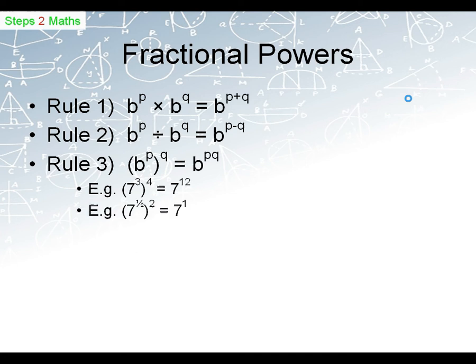However, what if we have something like 7 to the power of 1 half? So instead of powers of integers numbers, we've got powers of fractional numbers. 7 to the power of 1 half, all to the power of 2. From our rule, our rule says that we multiply those powers together, should give us 7 to the power of 1. So what we're saying here is that 7 to the power of 1 half, multiplied by itself, gives us 7.